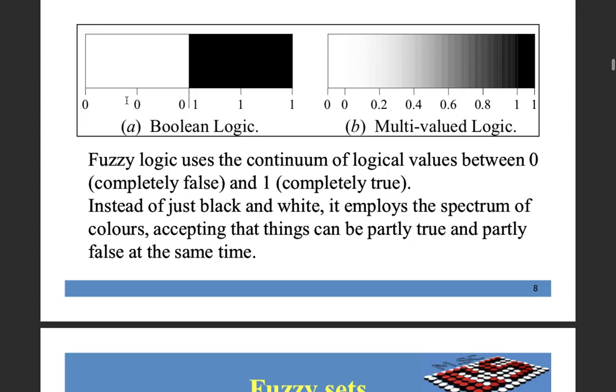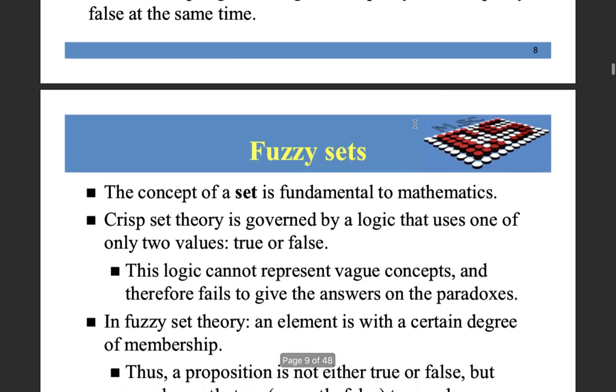So in Boolean logic, a member can either belong to that group or not. So 0 and 1. But in fuzzy logic, it varies from 0 to 1, both included.